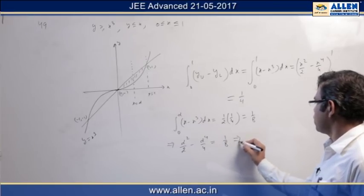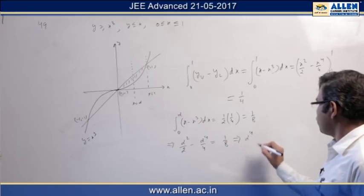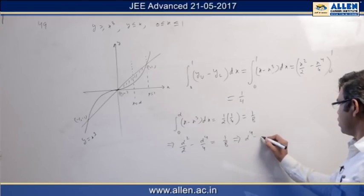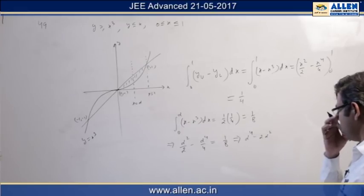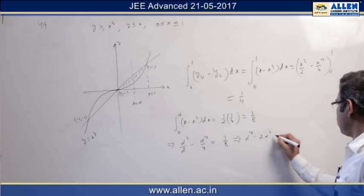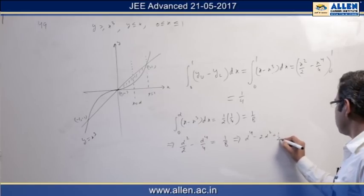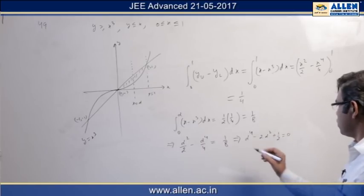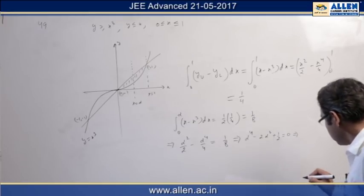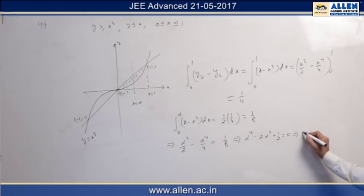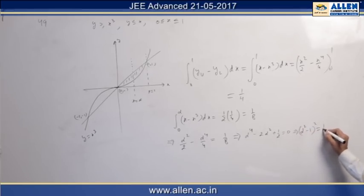So this implies α⁴ minus 2α² plus 1/2 equal to 0. So this implies (α² - 1)² equal to 1/2.